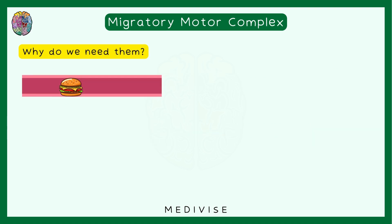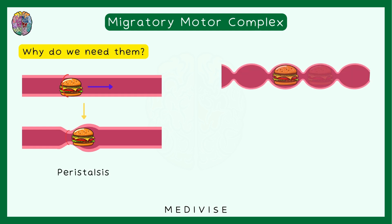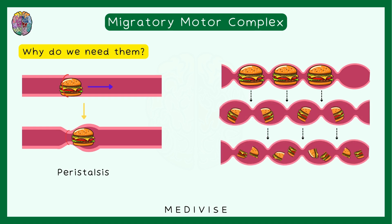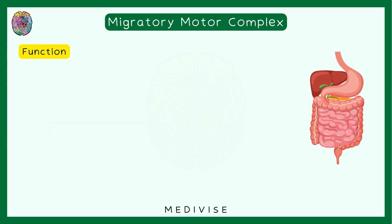Before jumping into how they work, we need to know why exactly we need them. Whenever you eat food, it has to propel forward from the mouth towards the anal canal. This is done by peristalsis, where a contractile ring propels food forwards. You also have segmentation where the chyme is chopped into smaller pieces — the relaxed part contracts and the contracted part relaxes, repeatedly chopping the chyme. But even after all this, some food, gastric juices, or debris may still be left behind.